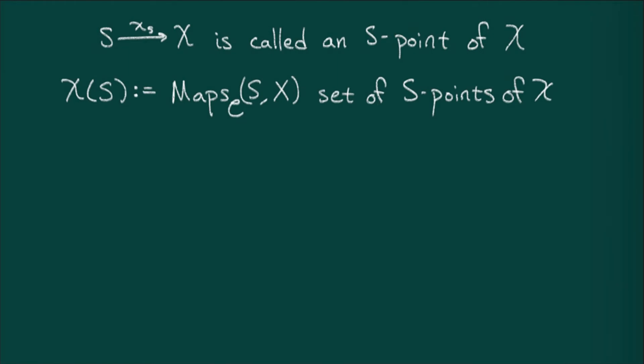Given two objects, s and x, we'll call a map from s to x an s-point of x. I'll usually denote this as little x sub s. These assemble into a set so that the set of s-points of x is just the set of maps from s to x. When x is just a set, then an s-point of x can be thought of as a labeling of s by points in x.